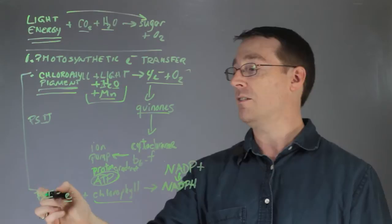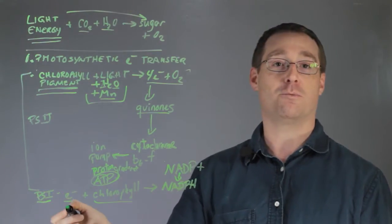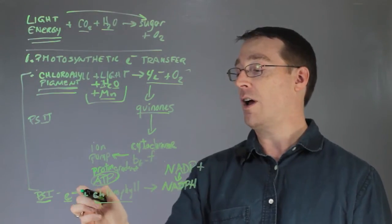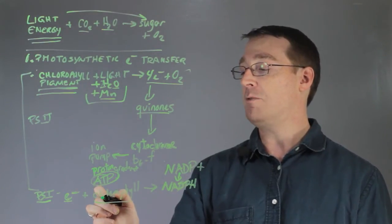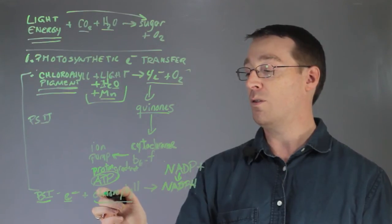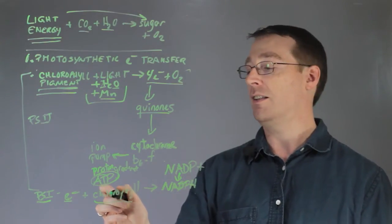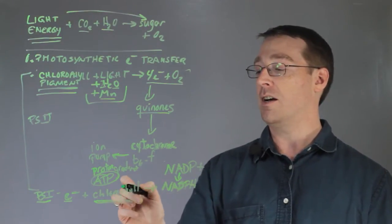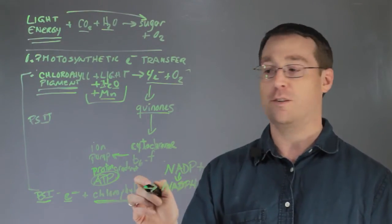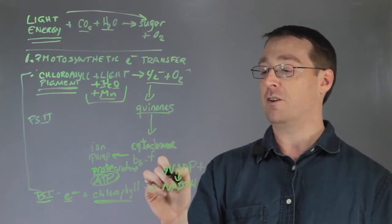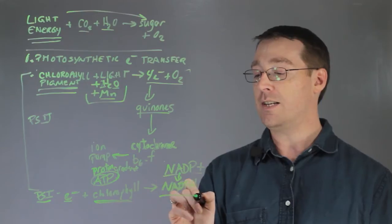And ironically, photosystem 1 follows in which an electron tries to fill the empty space left from when the first electron was excited out of the chlorophyll molecule. This starts another electron transport chain that eventually goes to ferredoxin, and then converts NADP into NADPH.